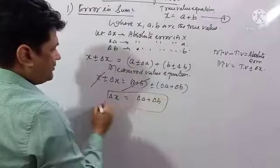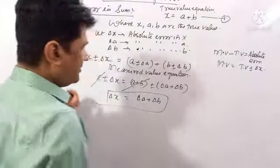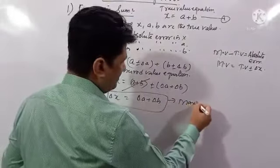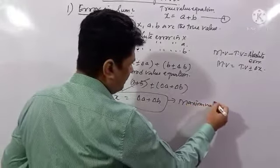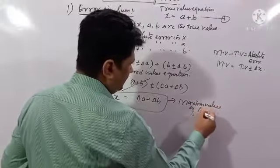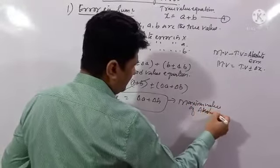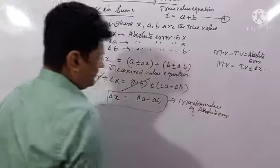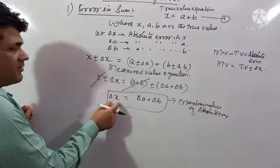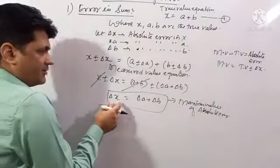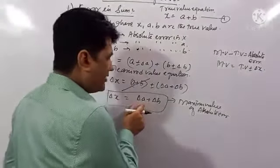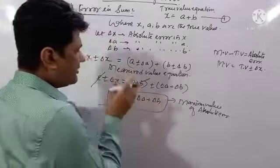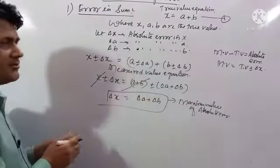So this is the maximum value of absolute error. The maximum value of absolute error in x equals the maximum value of absolute error in a plus the maximum value of absolute error in b. In the sum case, the absolute error is the sum of the individual absolute errors.